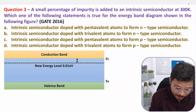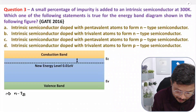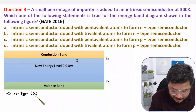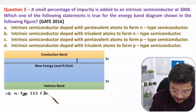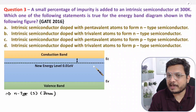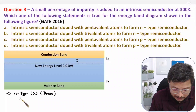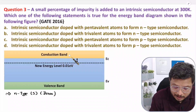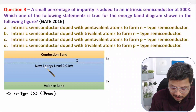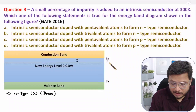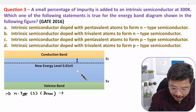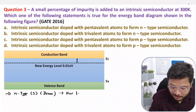For n-type semiconductor material we add pentavalent (five-valence-electron) donor impurities. By adding donor impurities we decrease the forbidden energy gap. The conduction band gets shifted, and the new donor energy level appears nearer to the conduction band edge Ec — so the new energy level is close to Ec in the forbidden energy gap.